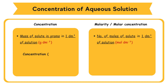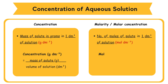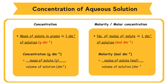Concentration (g/dm³) equals mass of solute (g) over volume of solution (dm³). Molarity (mol/dm³) equals moles of solute (mol) over volume of solution (dm³).